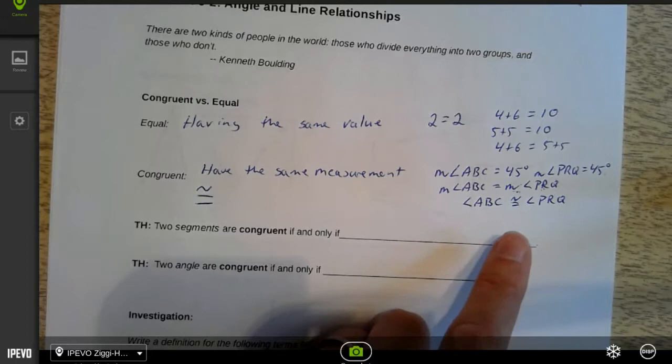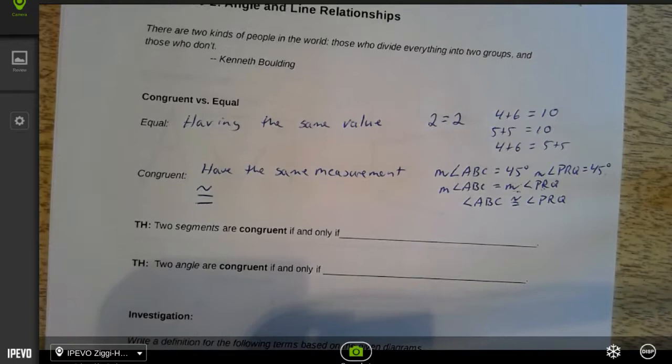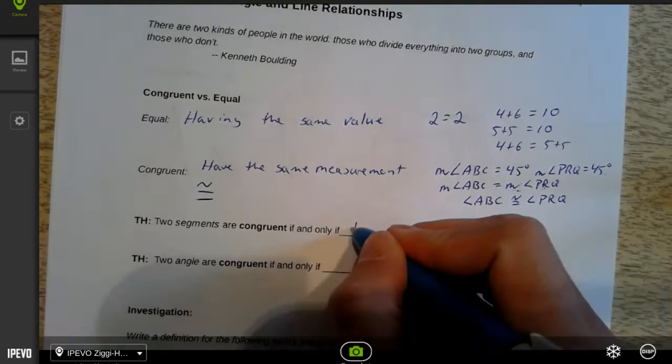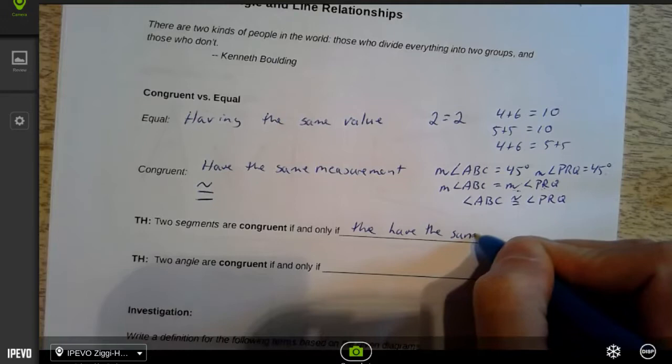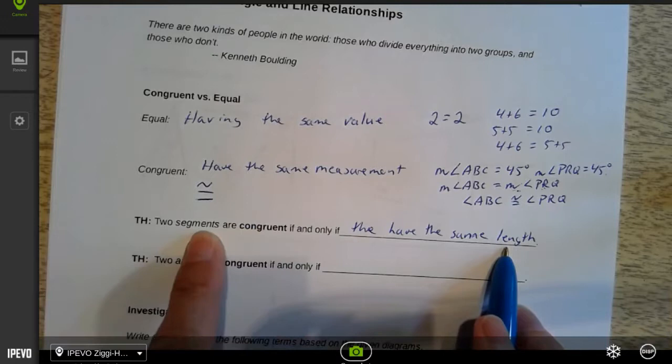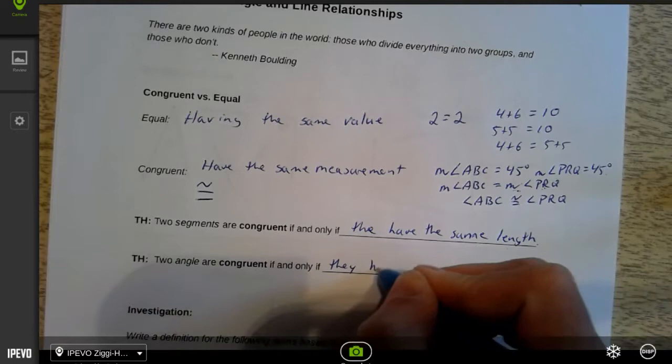So we say two segments are congruent if and only if they have the same length, because that's the value we use to measure segments. Two angles are congruent if and only if they have the same degree measure.